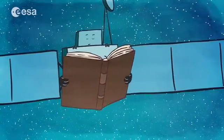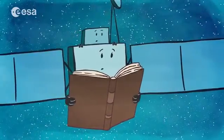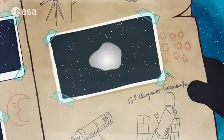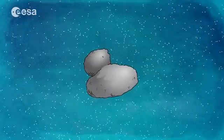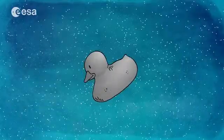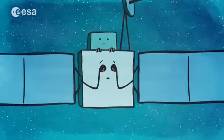But as she got closer, Rosetta realized that the comet was much more complex than people had thought using telescopes from far away. It almost looked like two comets stuck together, and from some angles its shape was really rather strange.